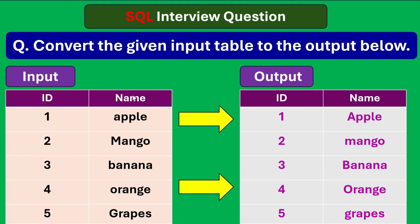As you can see here, it is given an input table and we need to convert that input table into an output table. It is given two columns like id and name in the input table, having the id and name of the fruits. In the output table we need to extract id and the name of the fruit, but if you observe, their formats are different.